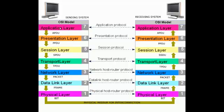The bits are sent to the physical layer of the receiving host. The bits are then framed and sent to the data link layer, where the MAC address is removed. The data is then in the form of packets and sent to the network layer, where the IP address is removed.